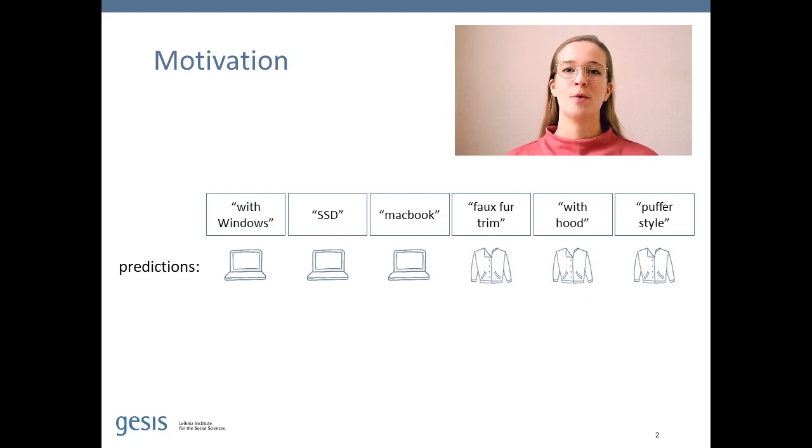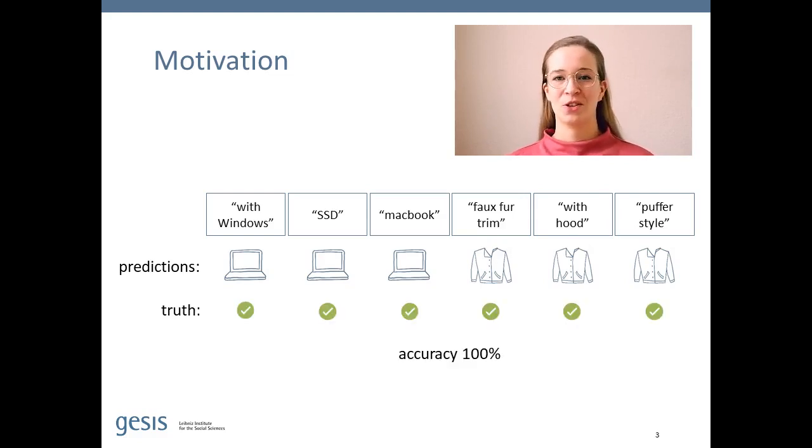The accuracy of a machine learning system influences how humans see a system, for example whether they trust and rely on it. We usually calculate accuracy by comparing system predictions with the ground truth. You can see some example data here, short utterances that are labelled with product categories. In this case it's laptops and jackets. Seems like an easy task, right? And you might already guess that a system predicts all data points correctly.